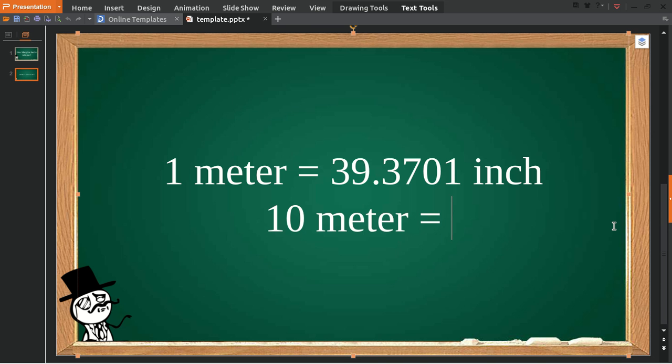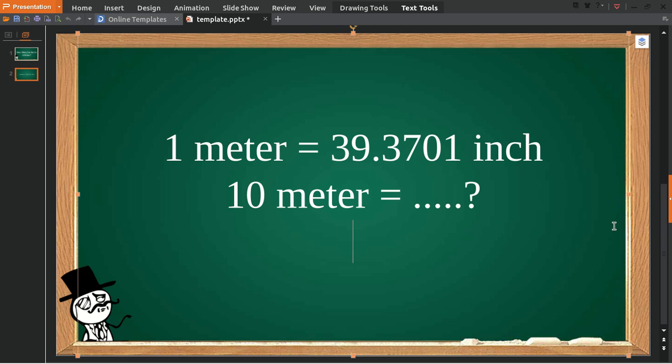Here's how you solve the problem. The first thing you need to do is put 10 and then multiply 10 by 1 meter.